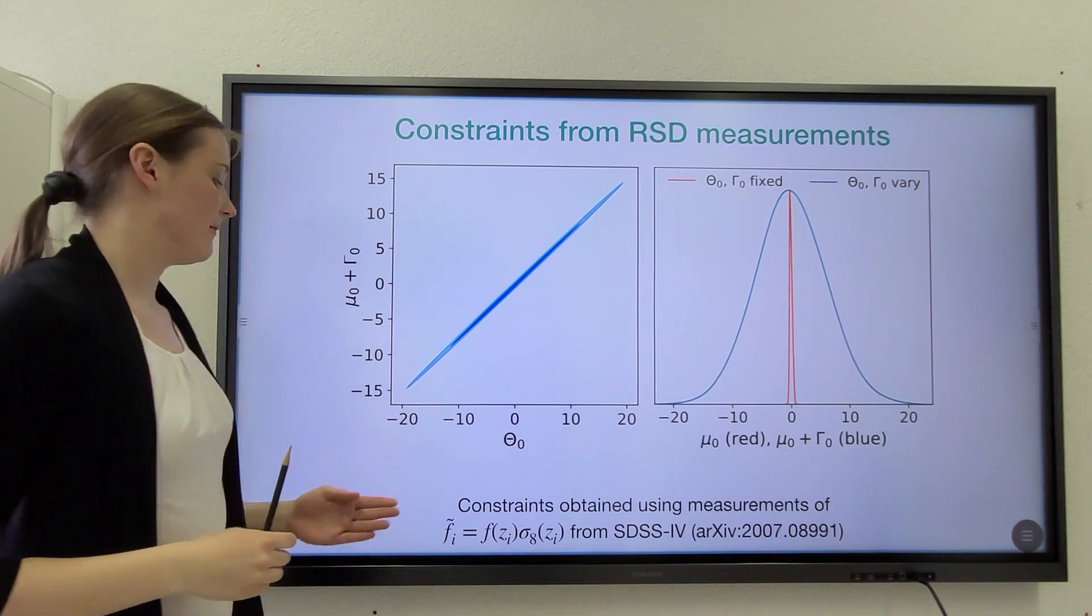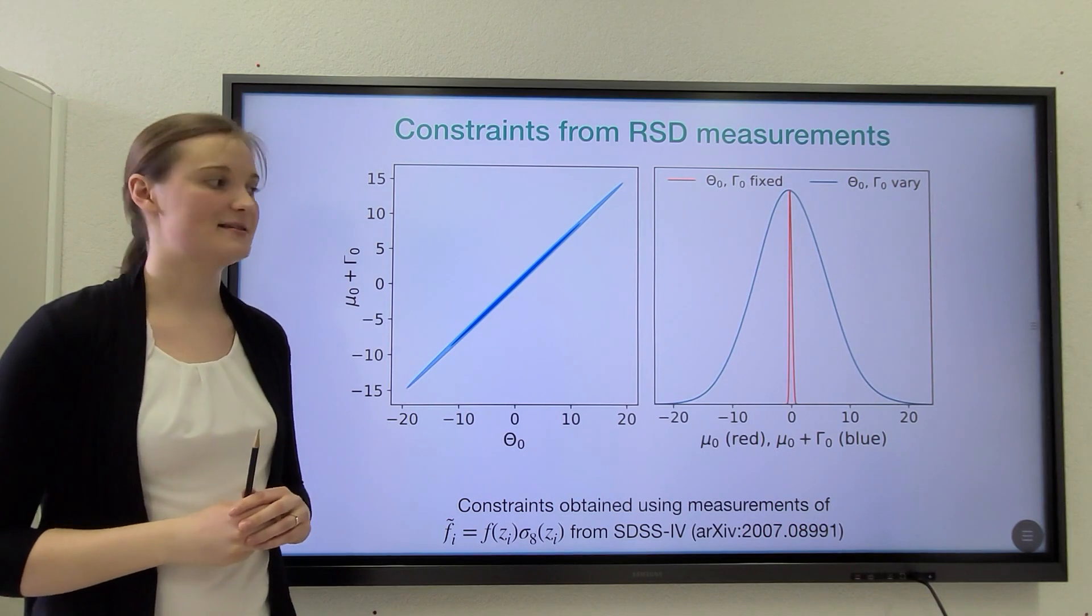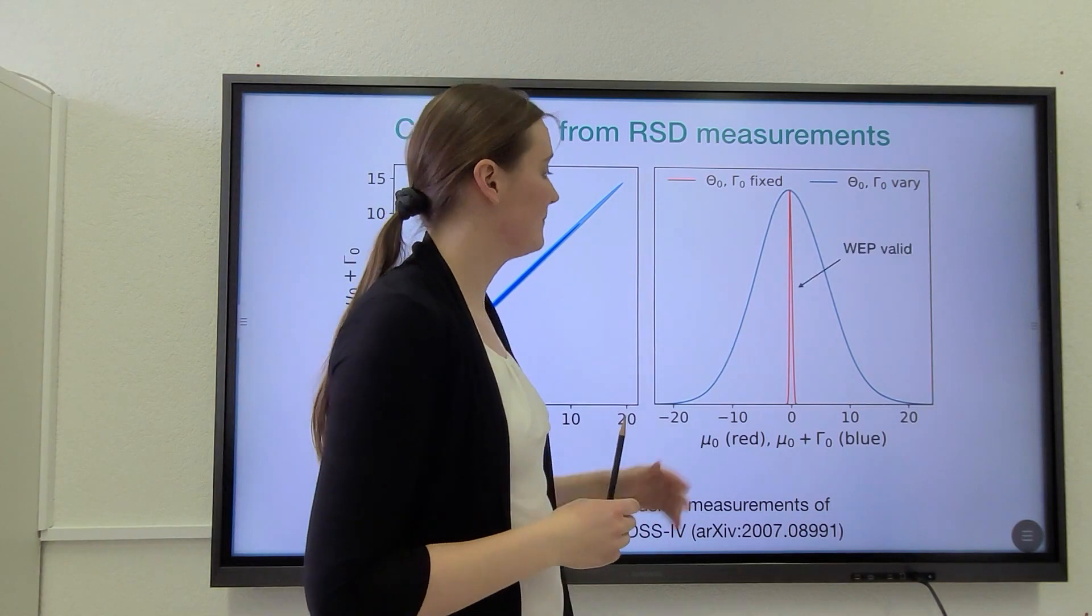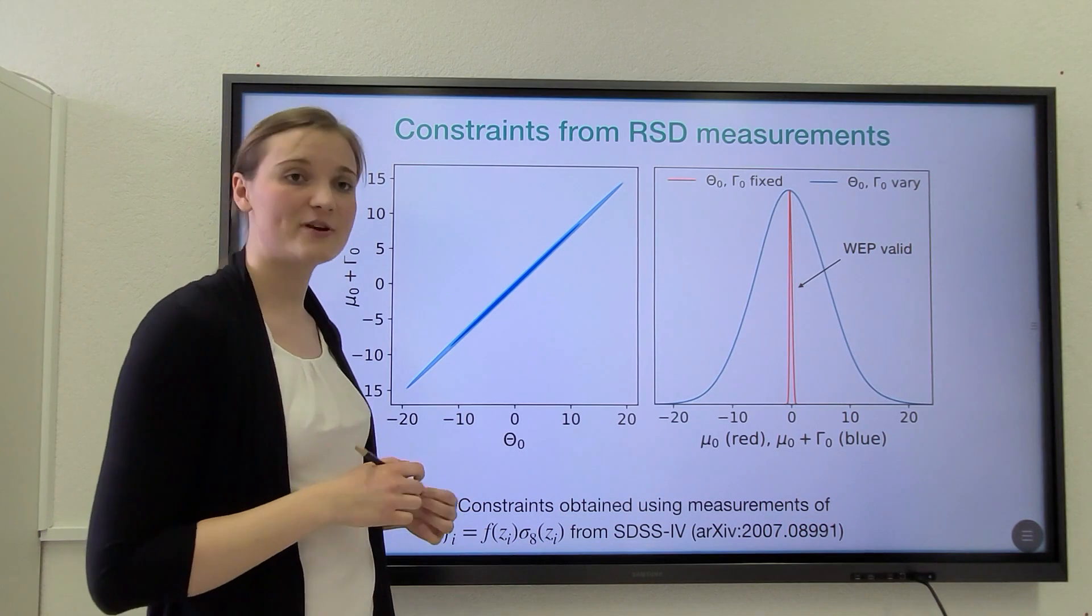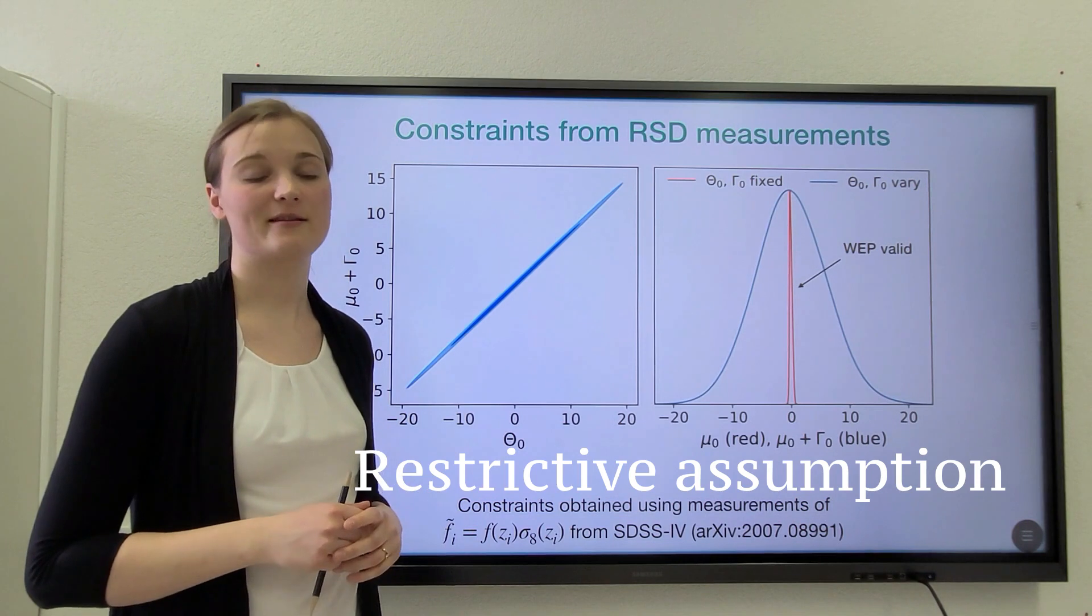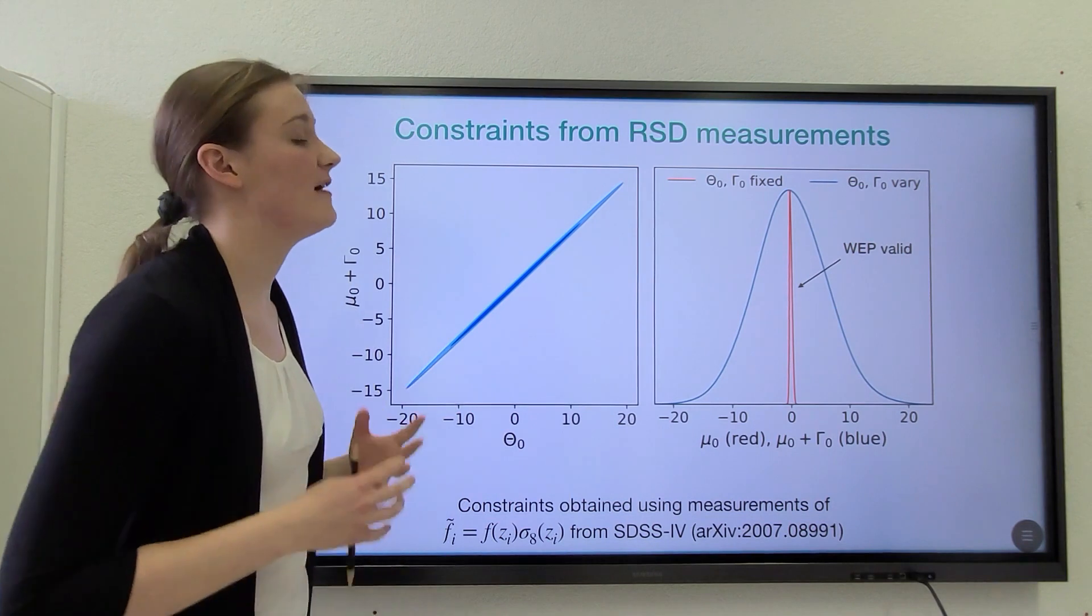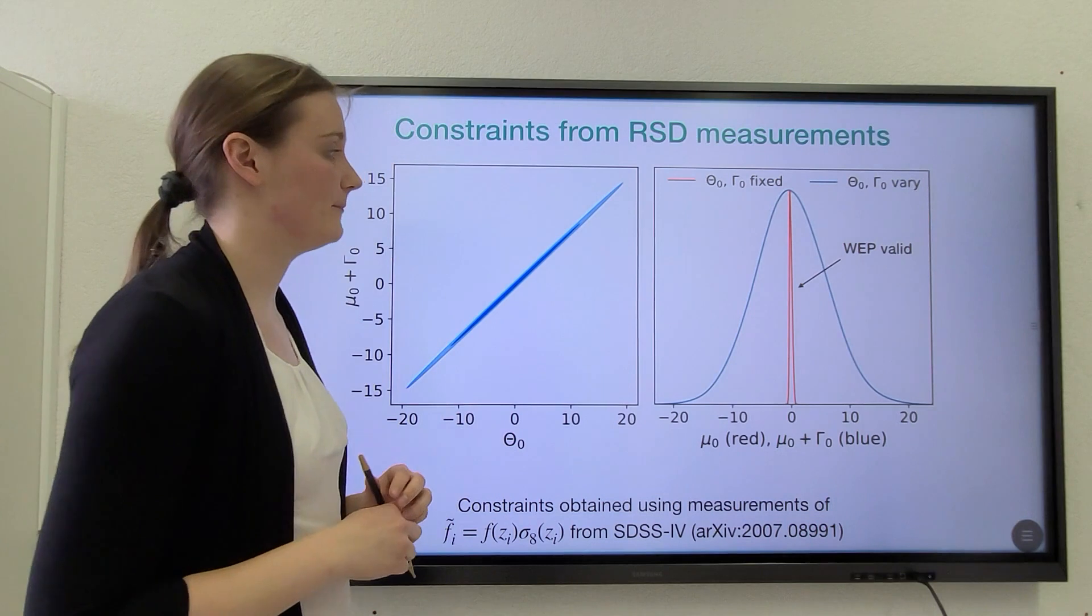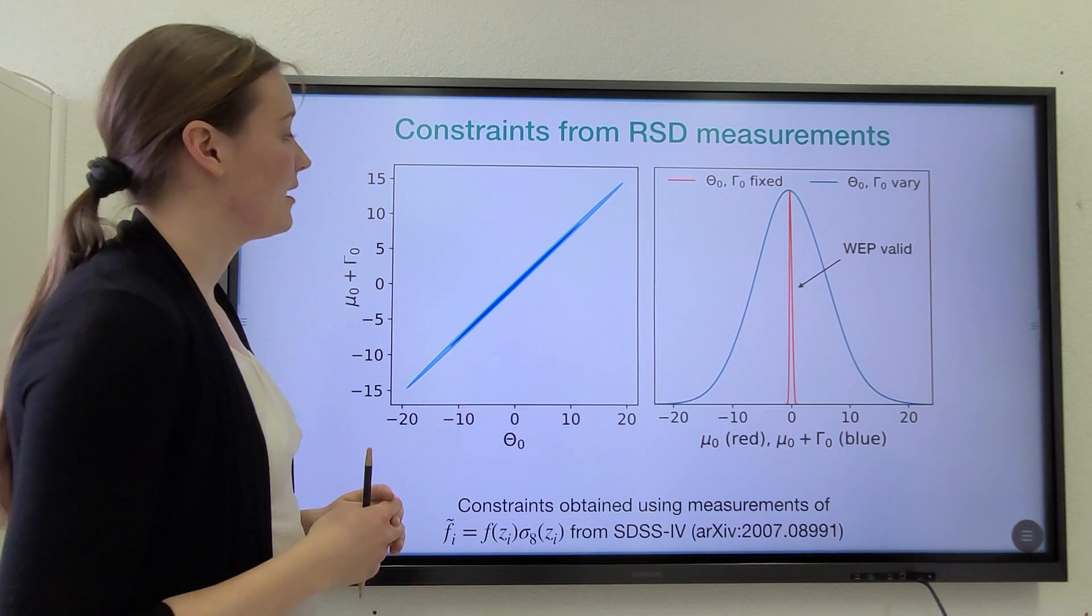We took the current measurements of tilde f from the completed SDSS-4 survey and we translated this into constraints on our parameters. First, the red curve here corresponds to the case where we only allow mu to vary. So this is the restricted case where we assume that the weak equivalence principle is valid for the dark matter component. And indeed, in this case, we get very tight constraints on the parameter mu zero, which is its deviation from the value of 1 today.